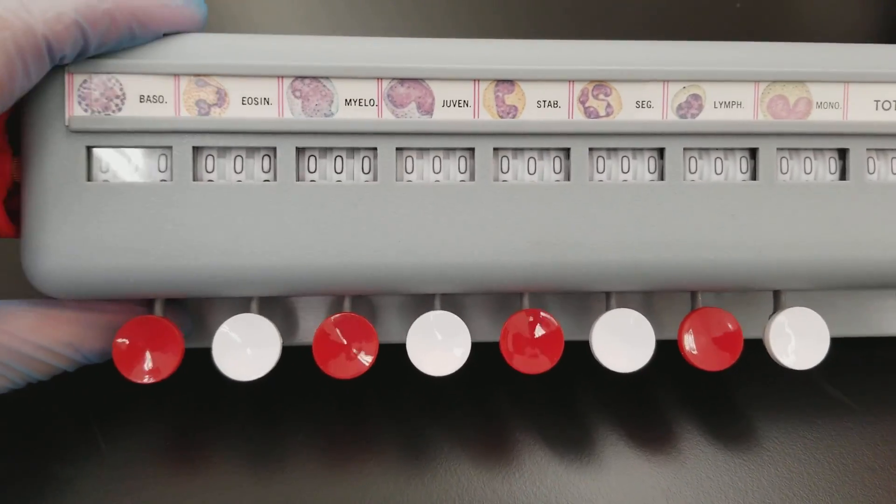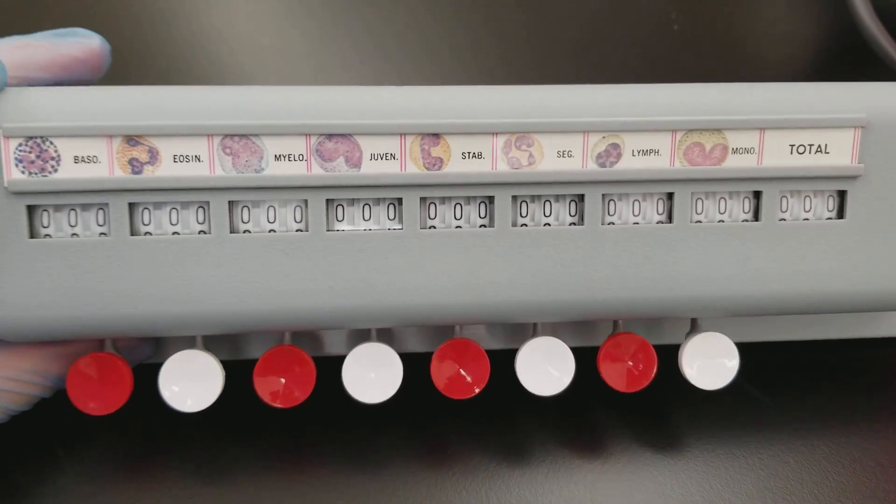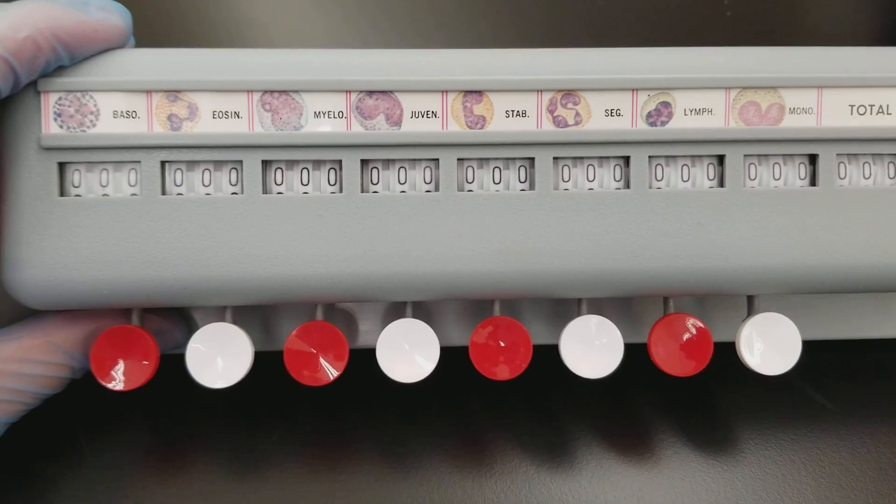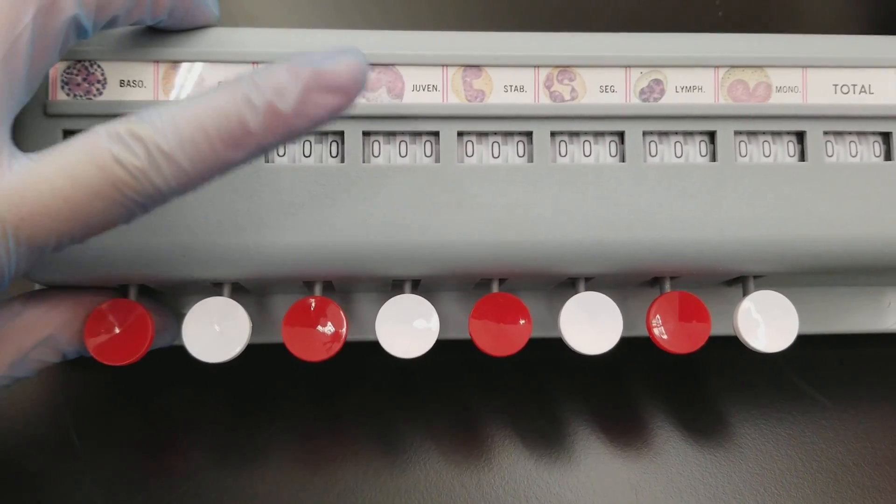So these basically are indications of cells that you're going to see possibly on the smear. But you can make any of these be whatever you want.